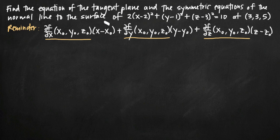All that's left are the three pieces: (x - x₀), (y - y₀), and (z - z₀). We take our point (3, 3, 5) and plug those values in for x₀, y₀, and z₀. We set the whole thing equal to 0, and that gives us the equation of the tangent plane. From there, it'll be easy to find the symmetric equations of the normal line.